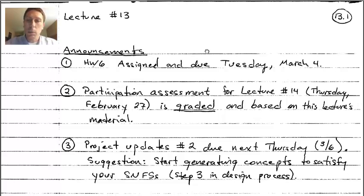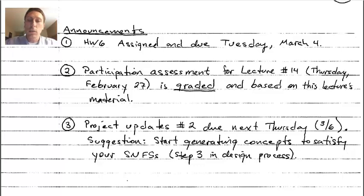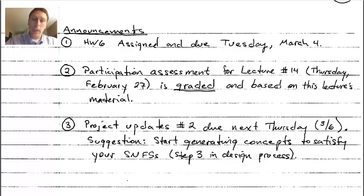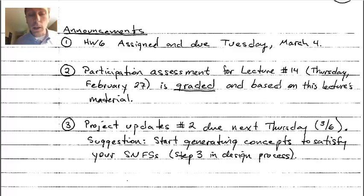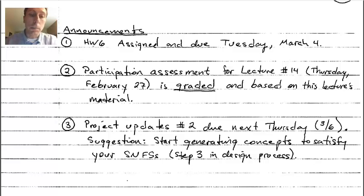Project update number two is due next Thursday March 6th. A suggestion is to start generating concepts to satisfy your solution-neutral function structures, which is step three in the design process. I'll be able to hand back your team update number one on Thursday, since some of you have feedback I've provided in your project update number one.